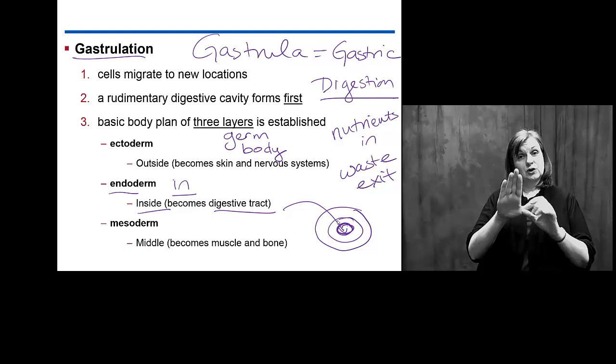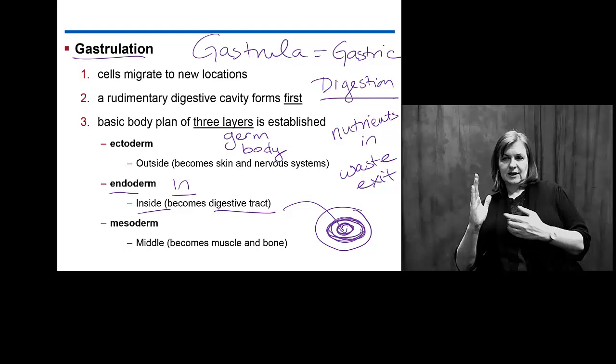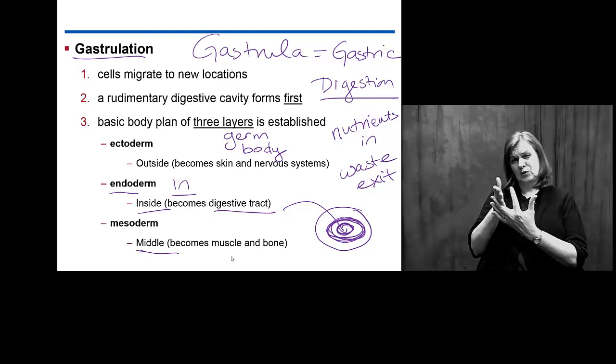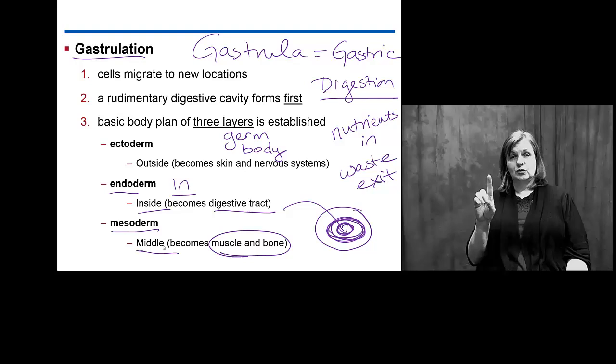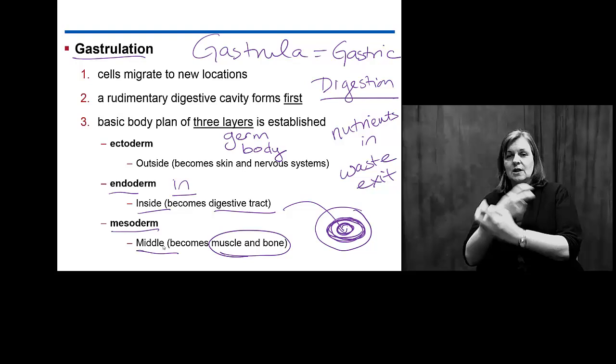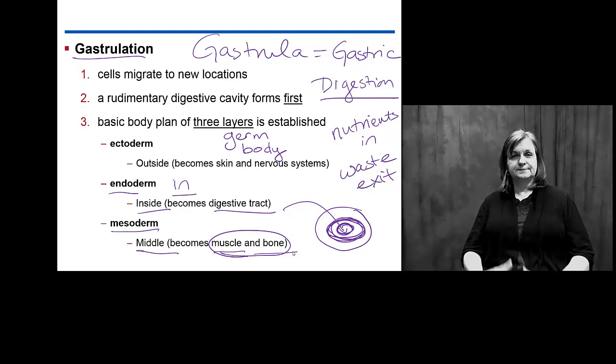The middle layer — what's your middle layer in you? Think about what lies between your gut, your stomach, your intestines, and your skin. The middle is muscle and bone, something known as mesoderm. When we get into more discussion of animals in the animal kingdom, we'll see that not every animal actually has mesoderm. Muscle and bone are very distinct features of particular animals.